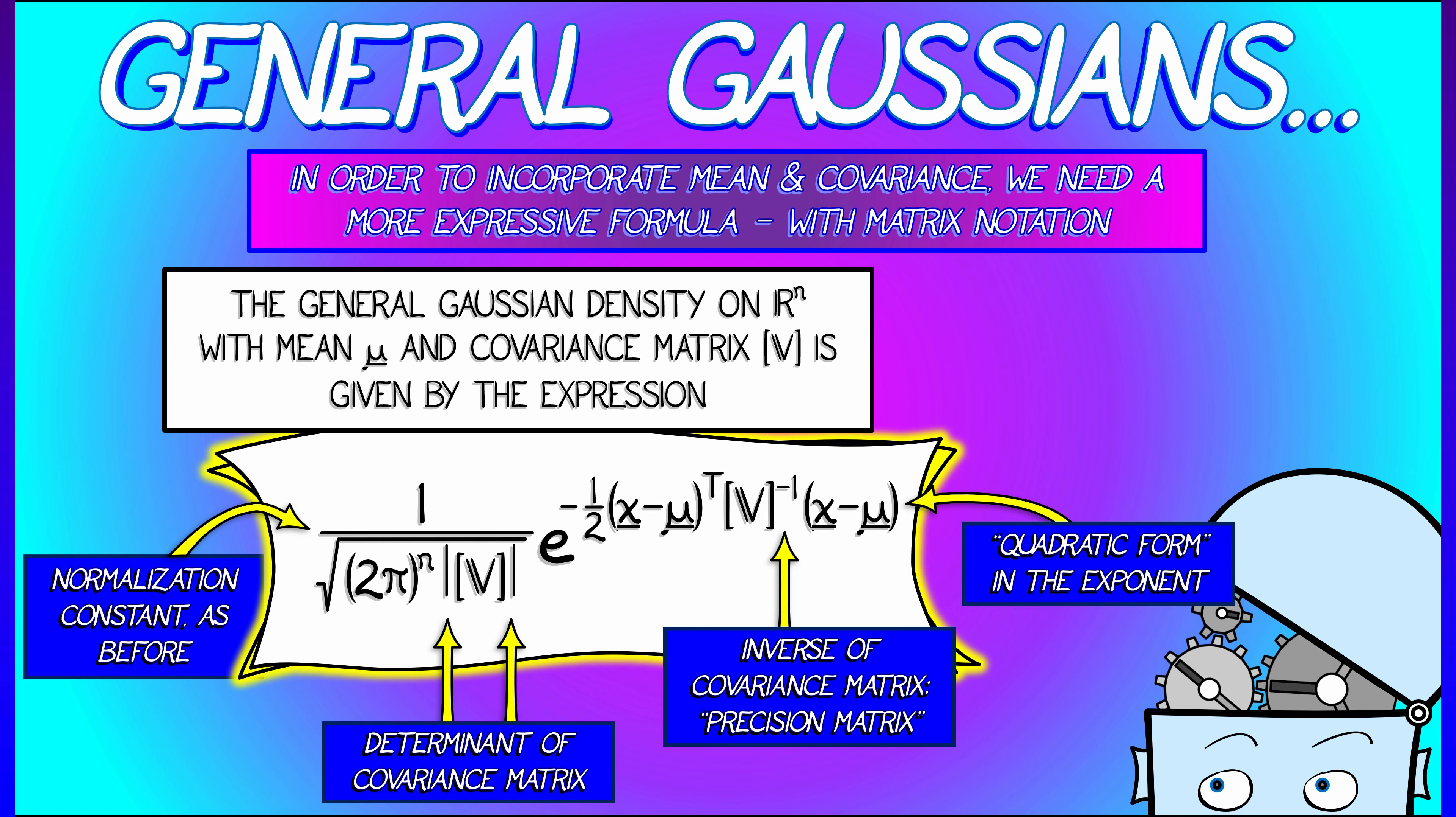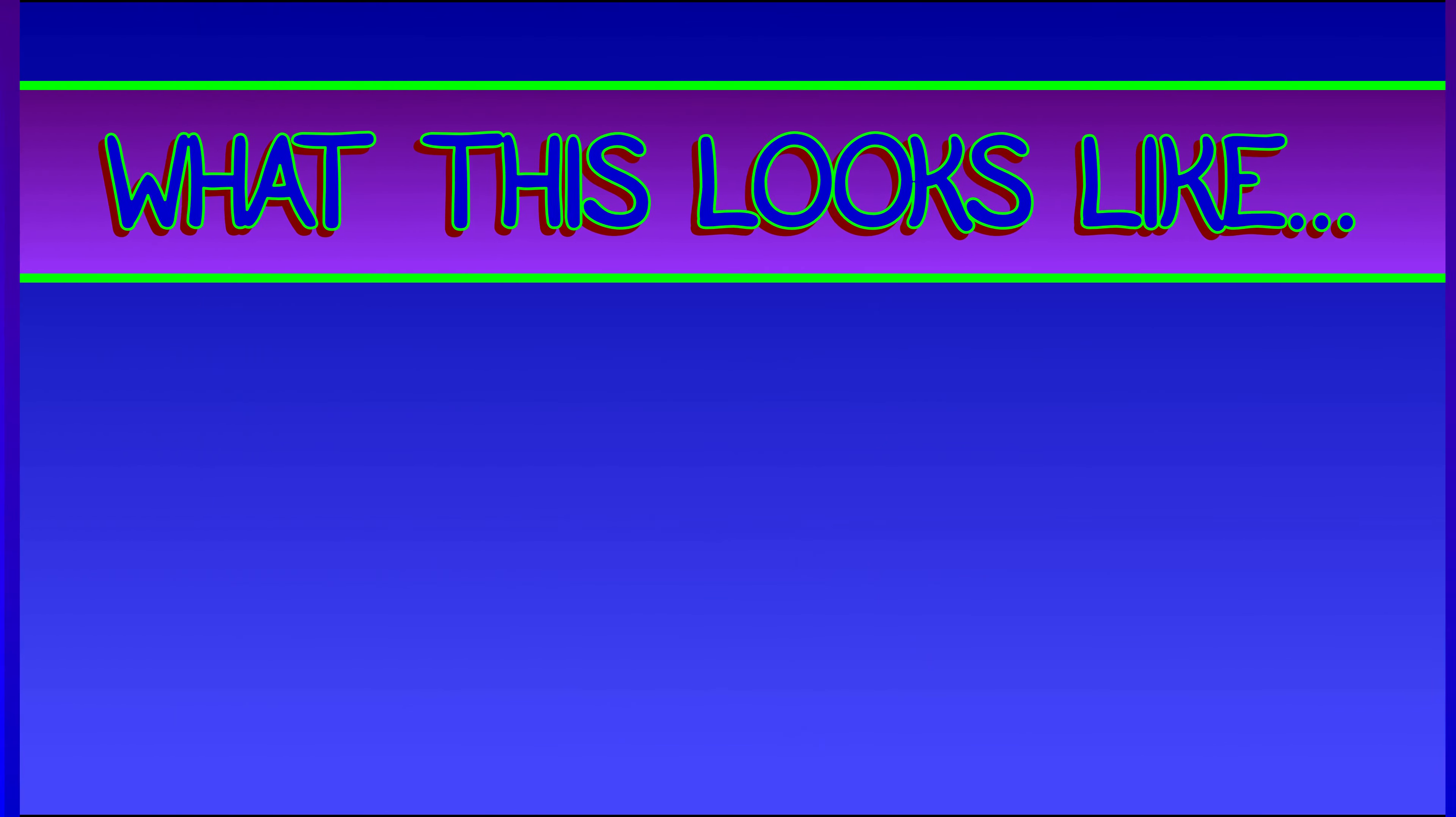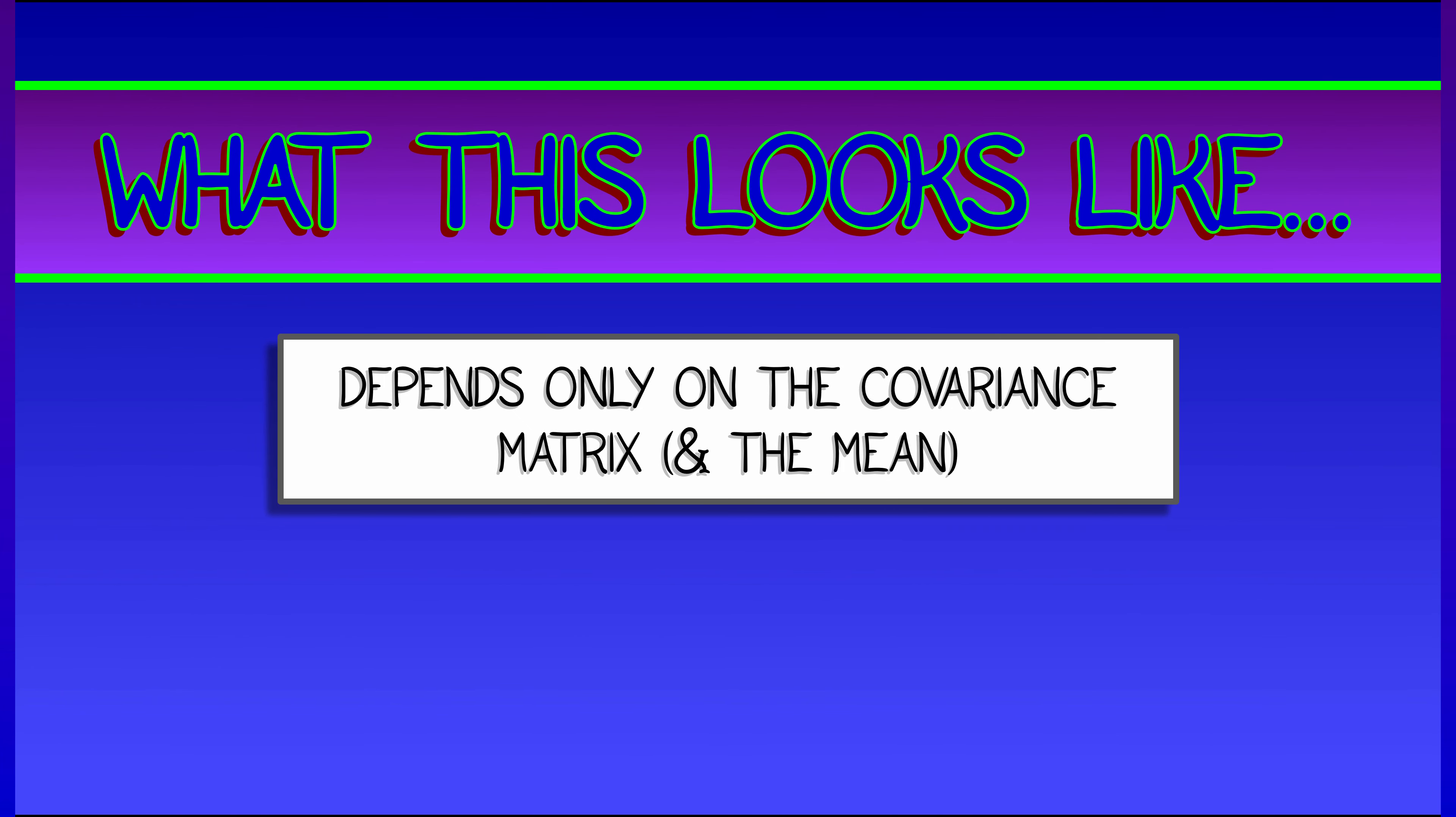But if you compare it with the one-dimensional formula, things match up nicely. Using a quadratic form in that exponent and using the inverse of the covariance matrix is a really great way to generalize the simple one-dimensional case. The normalization constant makes sense. I'm not saying you have to memorize this formula, but let's think about what it means and what it looks like. Because what's nice about Gaussians is that you only need to know the mean and the covariance, and everything else looks nice.